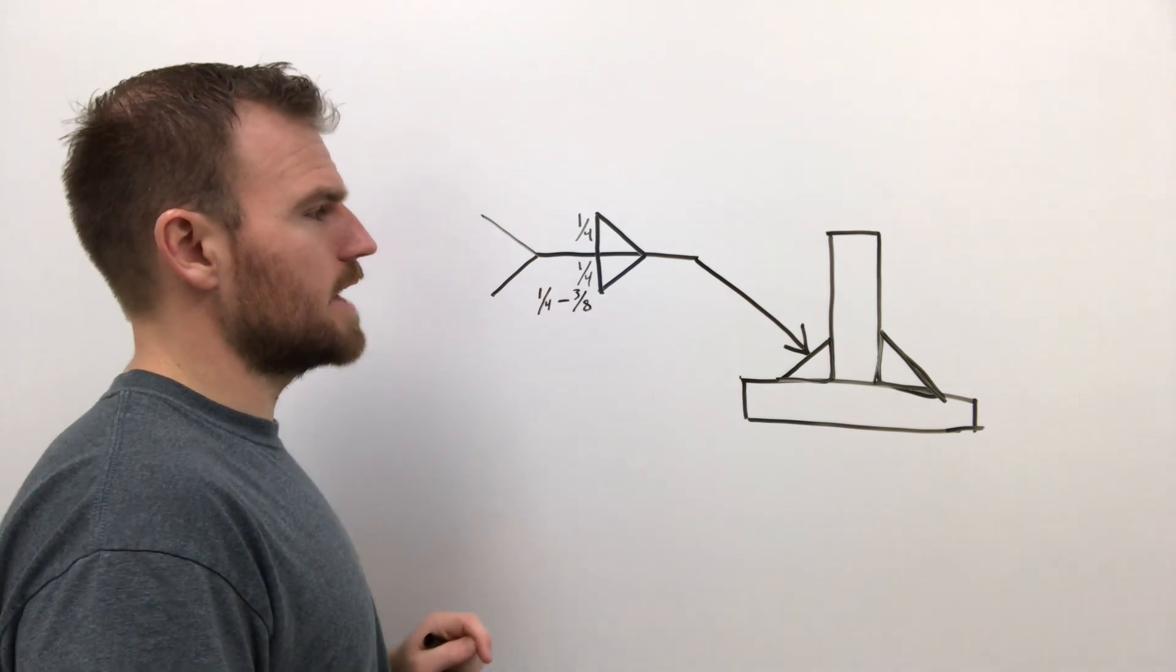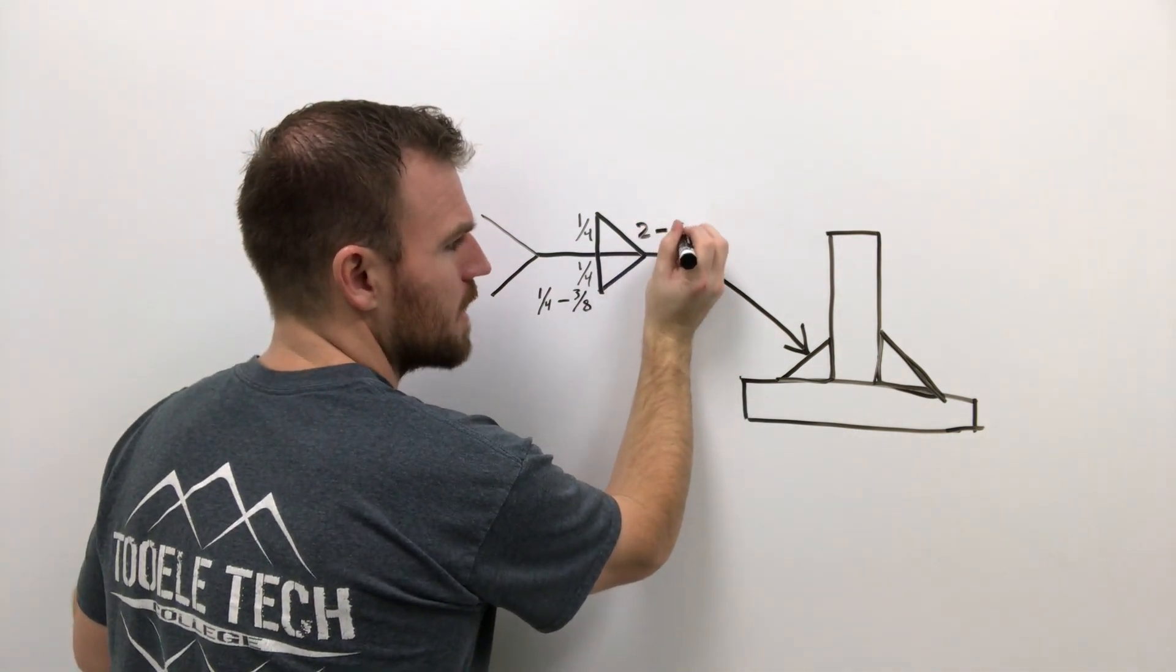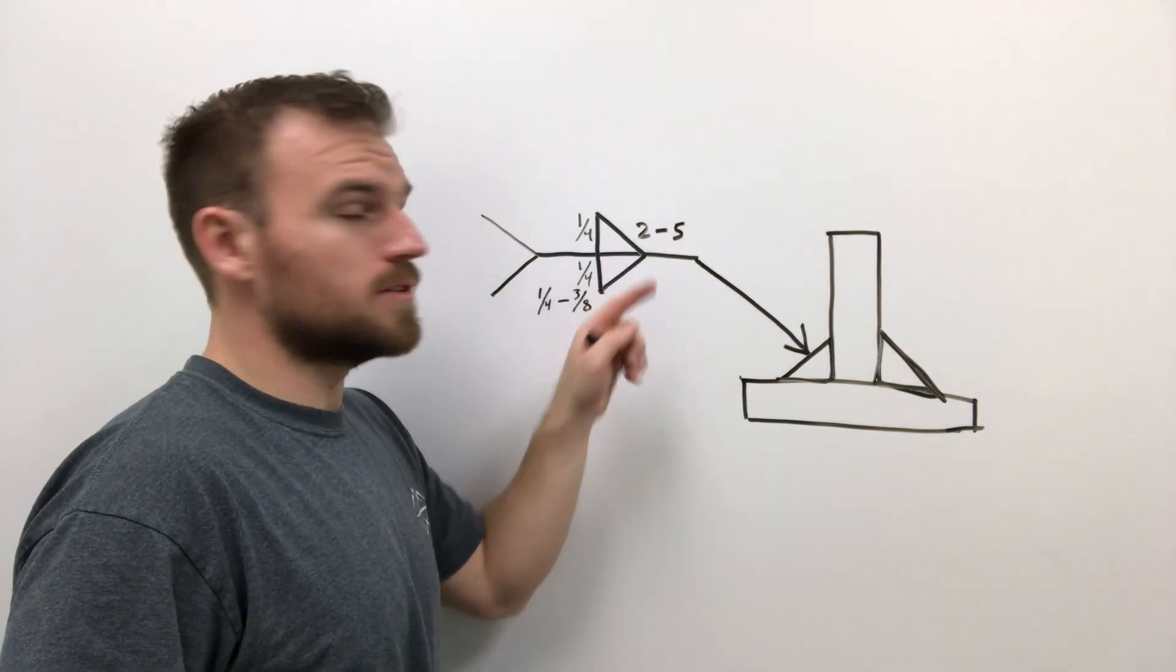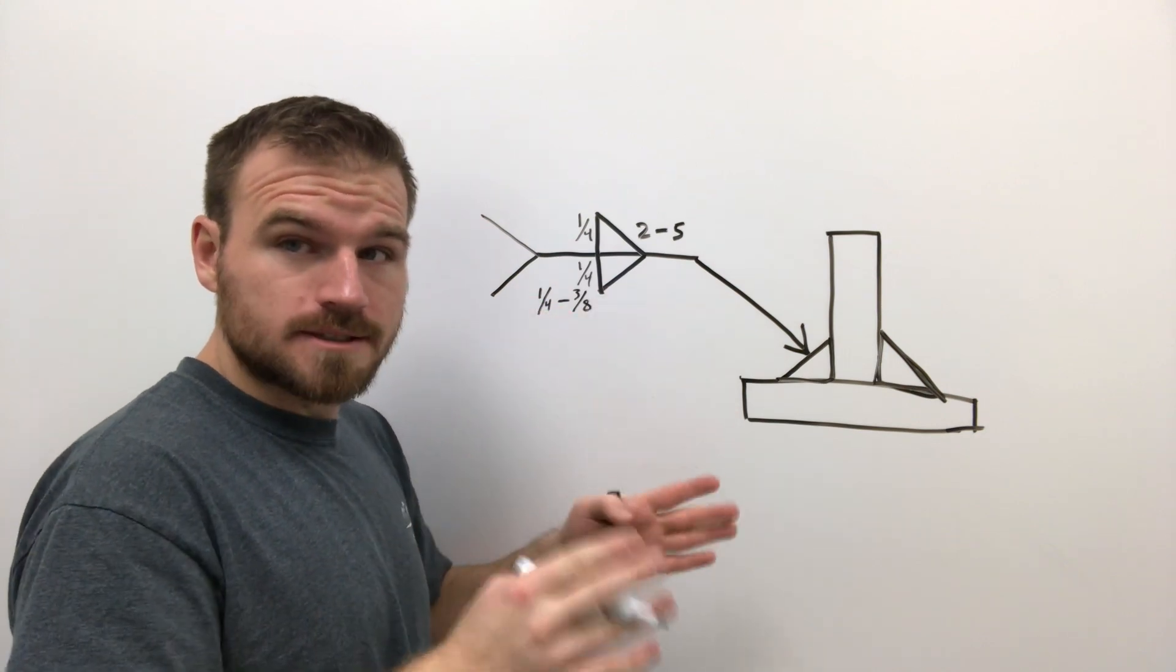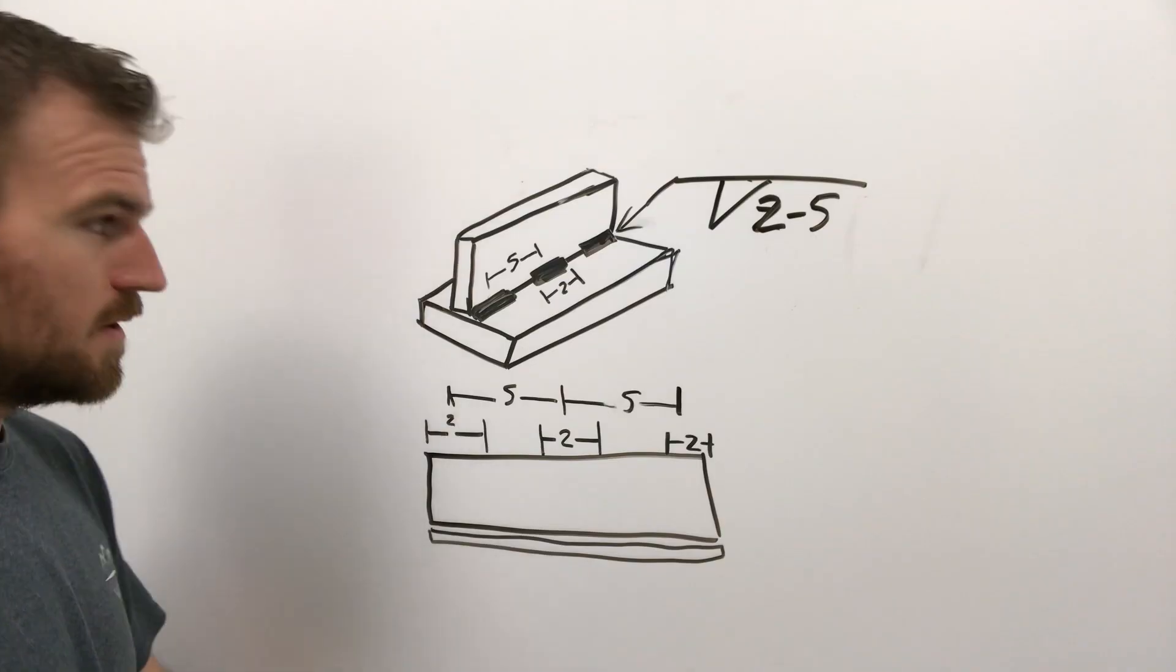So let's go ahead and continue on. There's a couple other measurements we could add in here. Sometimes there'll be a two dash five written right here, and this would mean that you're going to be putting a two inch weld every five inches on center. So let me clean this off and I want to show you what that's going to look like.